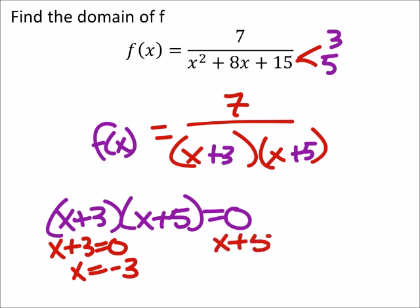What about x plus 5 when it equals 0? Well, x would be negative 5. Now these are values that x cannot be, so we should indicate that with this slash.